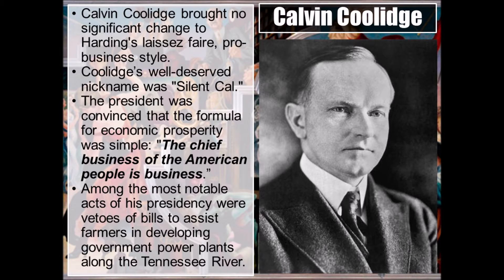Coolidge became president just as the economy was showing signs of recovery from the post-World War I depression. Wilson had very high taxes during World War I, Harding started bringing them down, and then Coolidge said that wasn't enough — they must be much lower. Coolidge signed sharp tax reductions into law. The top income tax rate during World War I had been 77 percent; under Coolidge it reached a low of 25 percent. What followed was a spending binge the likes of which the country had never seen.